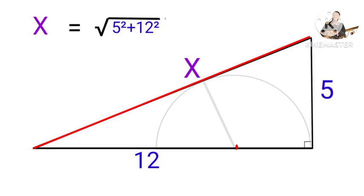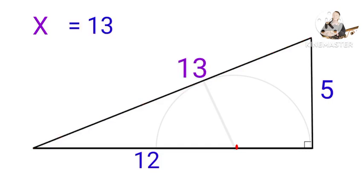X will be equal to the square root of 5 squared plus 12 squared, which will be equal to the square root of 25 plus 144. X will also be equal to the square root of 169. X will be equal to 13. So the hypotenuse is 13. Excellent!